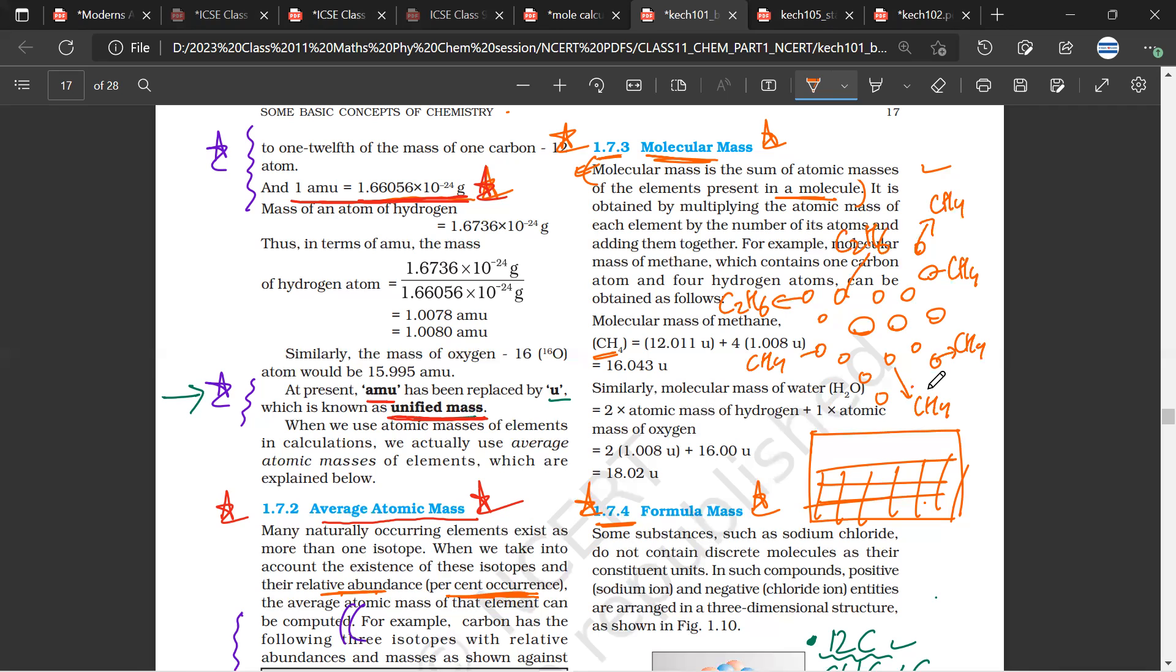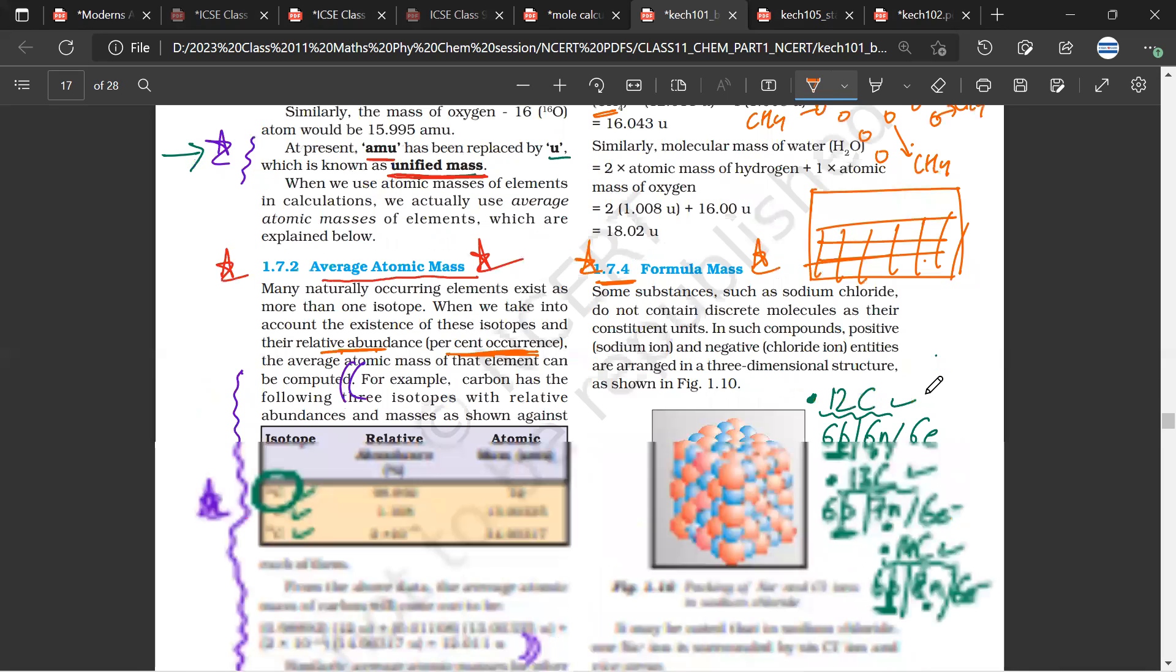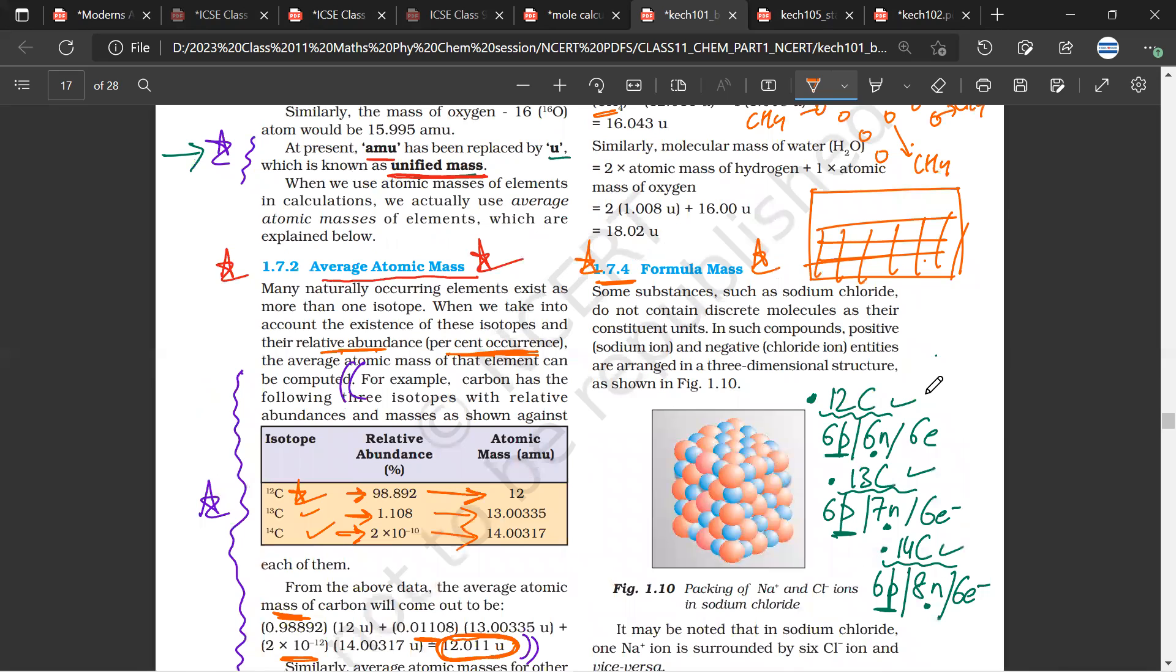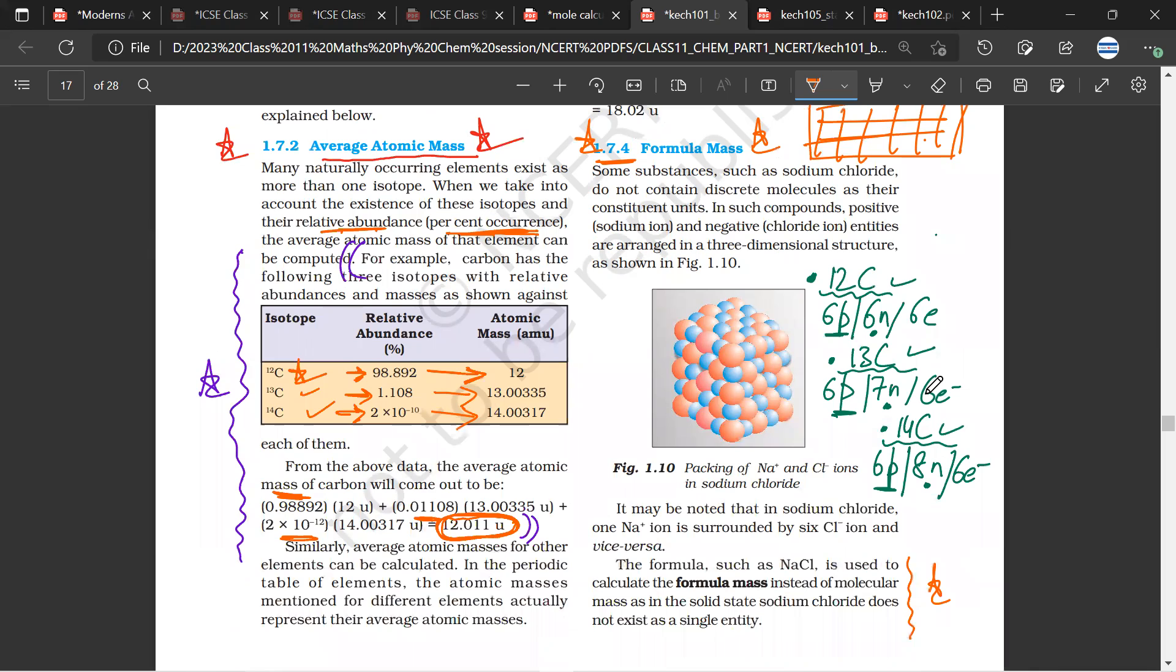But for formula mass, what happens is, if you look at the ionic substances, they don't have any discrete molecules as their constant units. They don't have discrete molecules.